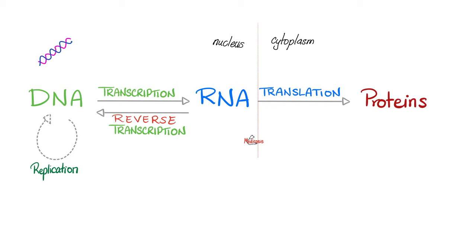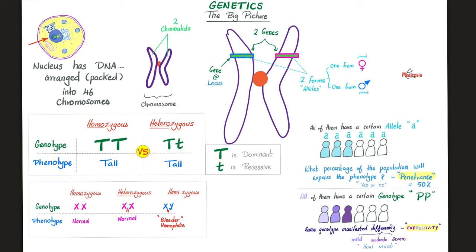Please look at this picture one more time — here is the big picture in genetics. Your nucleus has DNA packed into 46 chromosomes. This is one chromosome, which is made of two chromatids. A piece of the DNA — i.e., a piece of that chromosome — contains a gene. And you got two copies, two forms, two alleles: one from mommy, one from daddy.